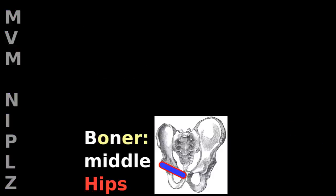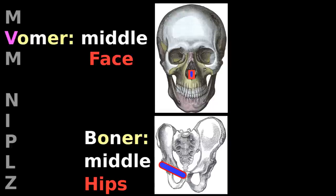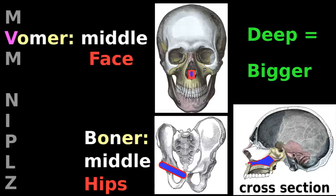The mandible is the jaw bone. You have a manly jaw. A boner is in the middle of your hips; a vomer is in the middle of your face. When deep, they are bigger than you'd expect.